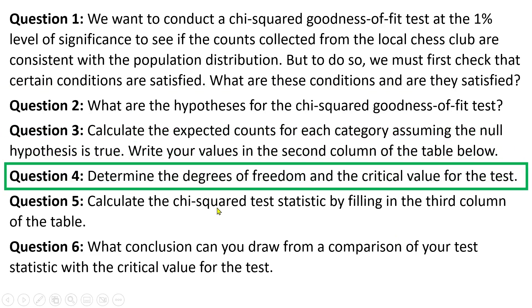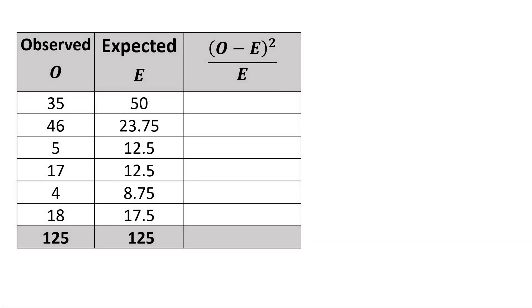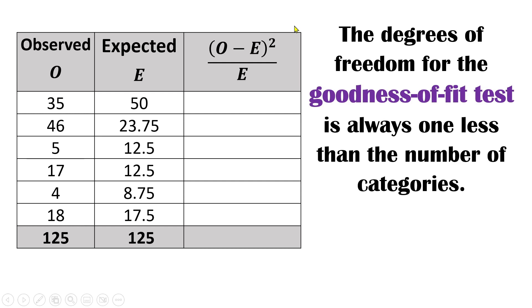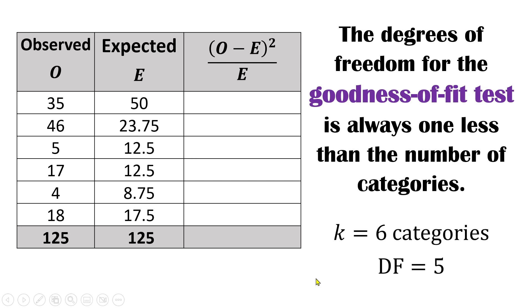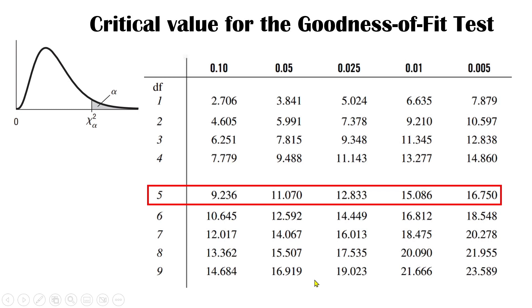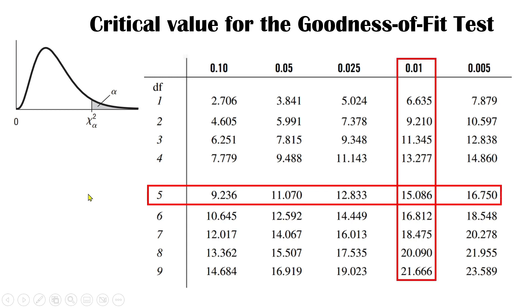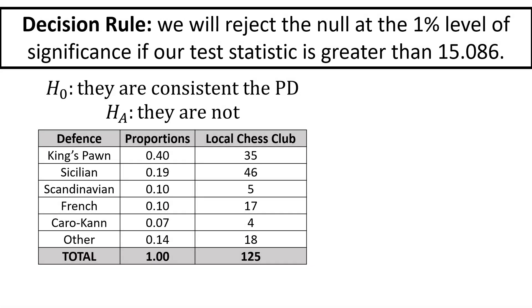Calculating those values and adding them up is where we calculate the chi-squared statistic. Before we go there, the next step is to set up the test — specifying our decision rule. The degrees of freedom for a goodness-of-fit test is always one less than the number of categories. Here we have six categories, so the degrees of freedom is five. That tells us where to look in the chi-squared table. The test was specified to be a 1% test, so the critical value is 15.086.